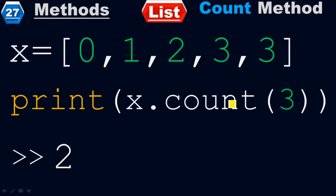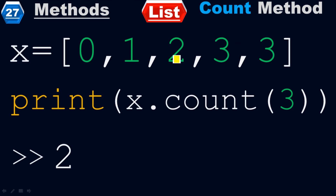We have two 3s — one and two — therefore it returns 2. If you have only one 3, it returns 1. If you have five 3s in the given list, it returns 5. It specifically counts the number of that specific element which you mention inside the parentheses, not the count of total elements. Understand the difference.